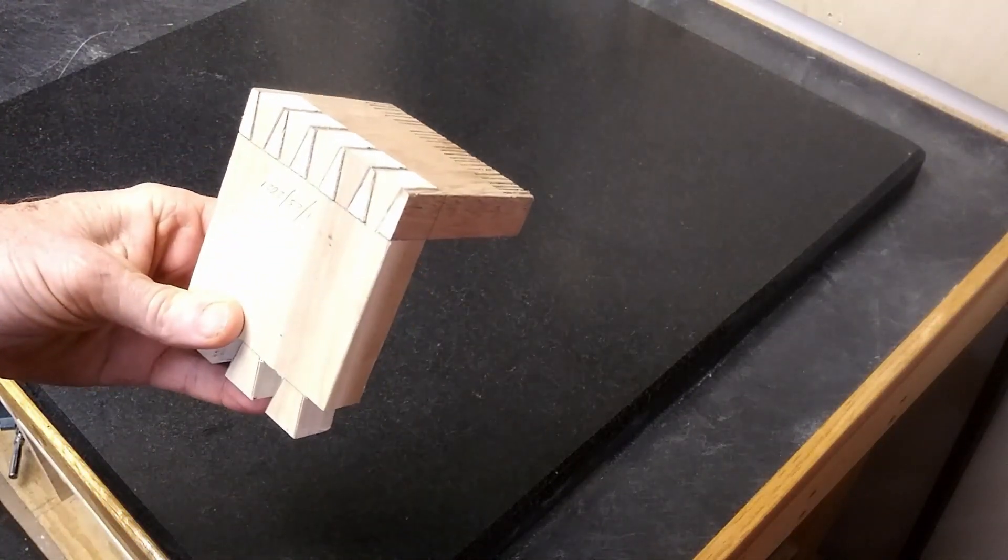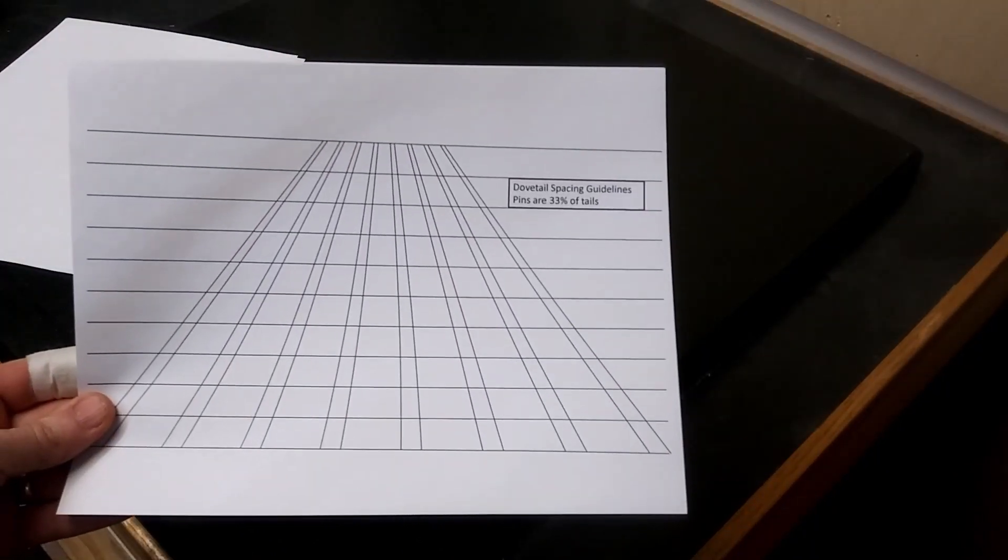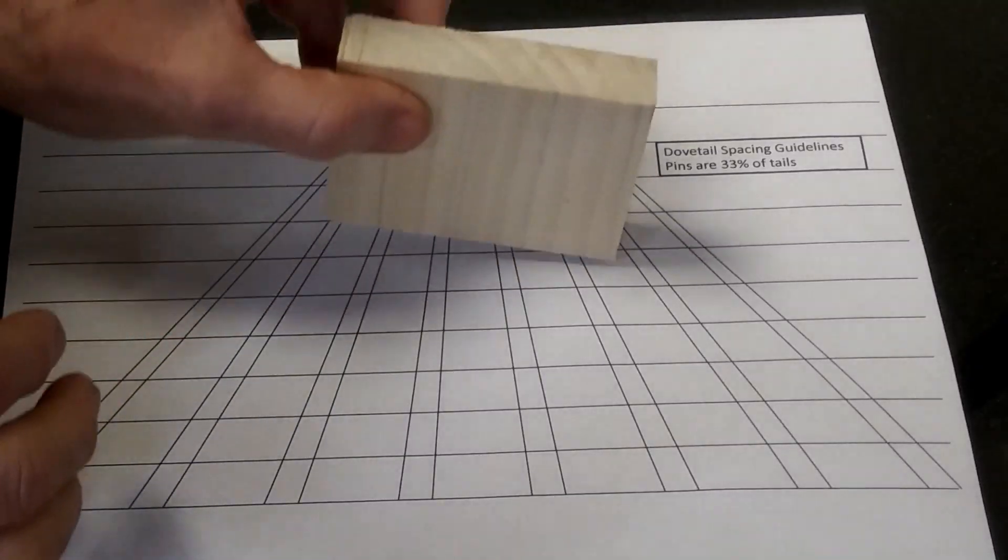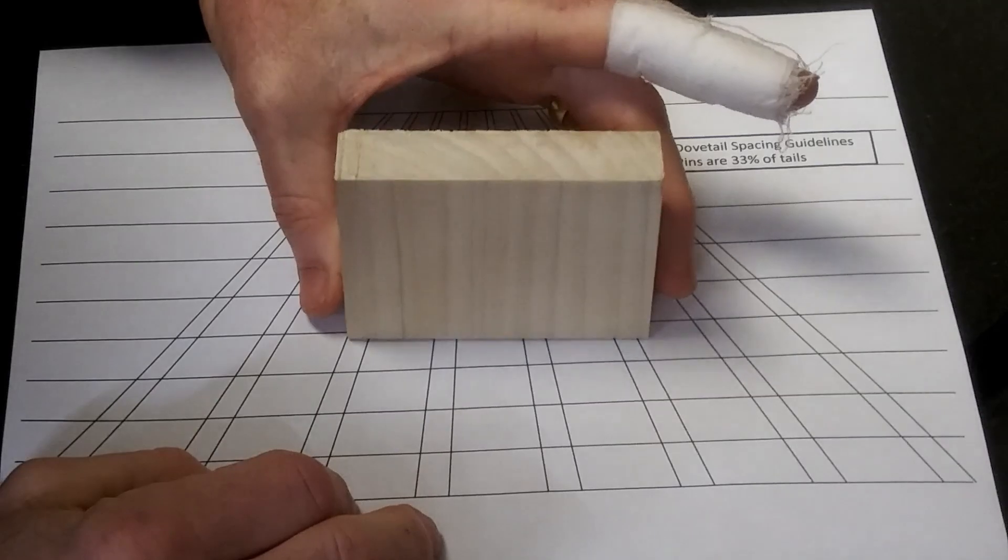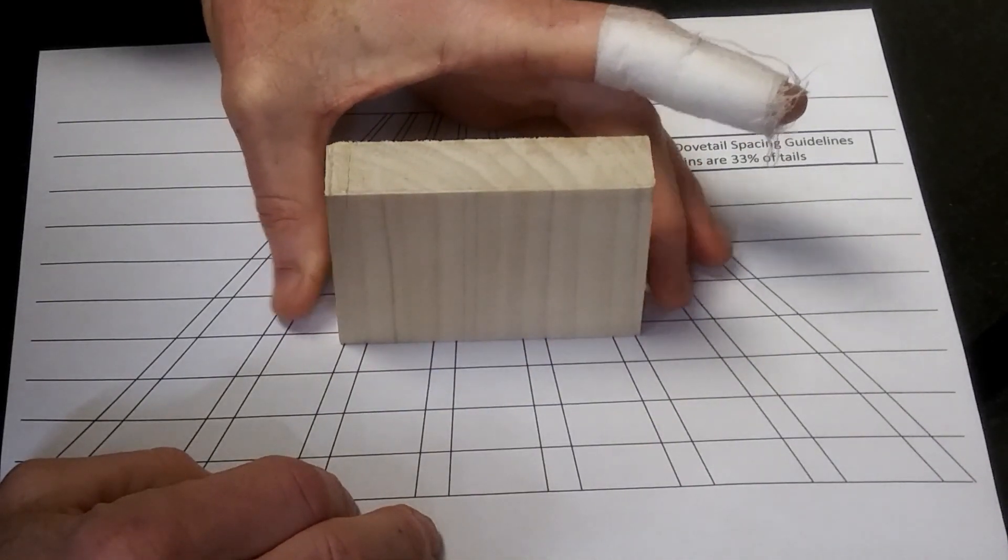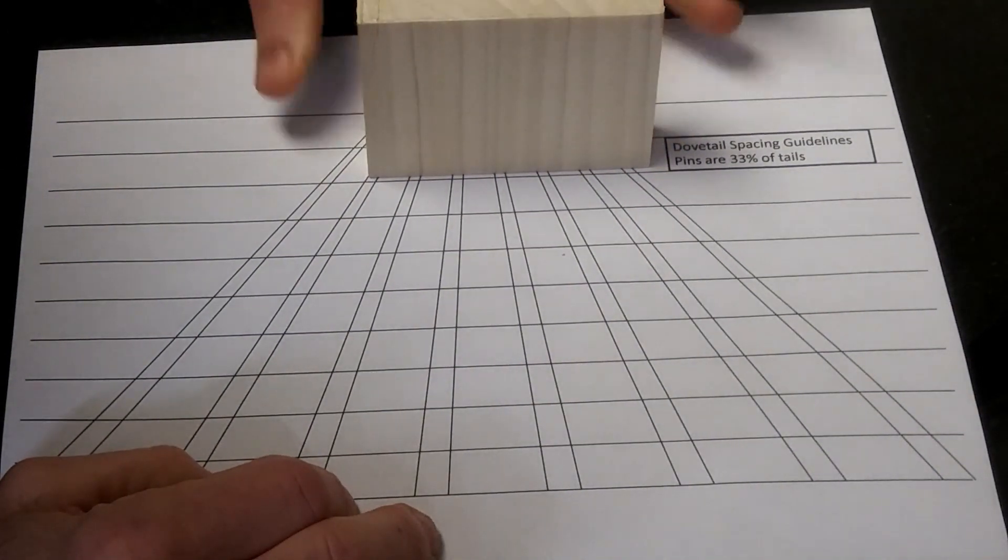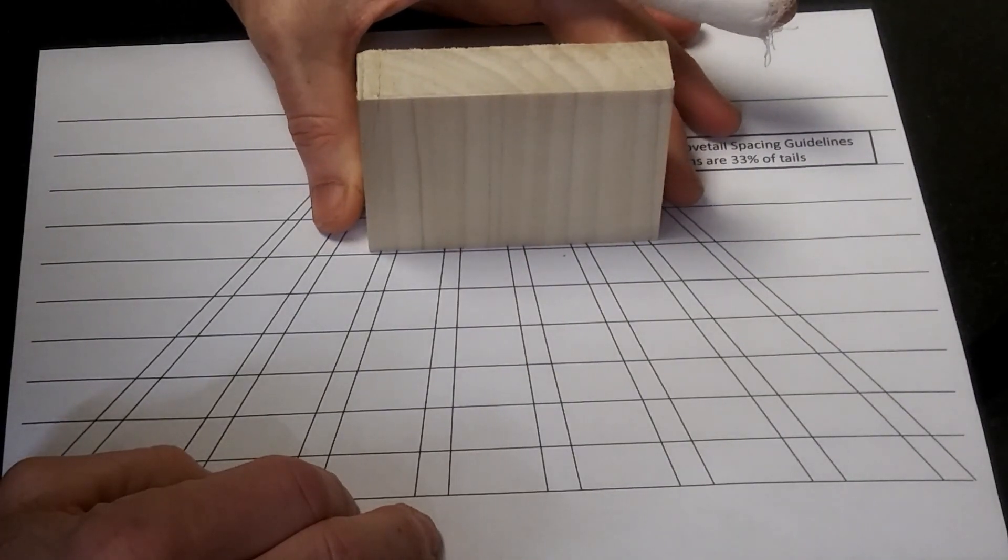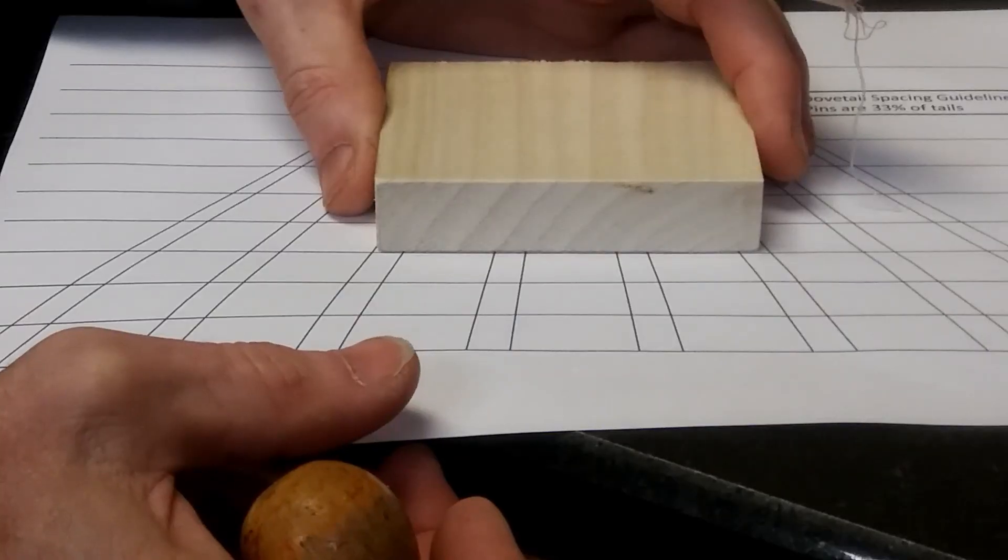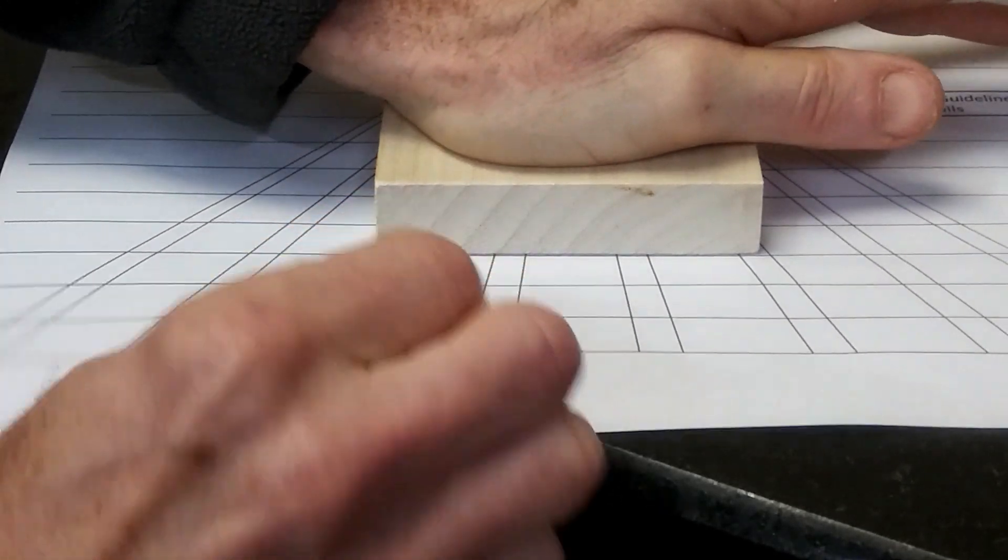To lay out dovetails, most people use a ruler or dividers, so I thought I could make an easier way. Here's five different sheets that show different spacing for dovetails. Here's the one where the pins are 33% the size of the tails. If I slide this piece of wood back and forth, I can see an example with six different tails, or maybe that's too many and I only want four different tails, or maybe as few as three might work nicely.